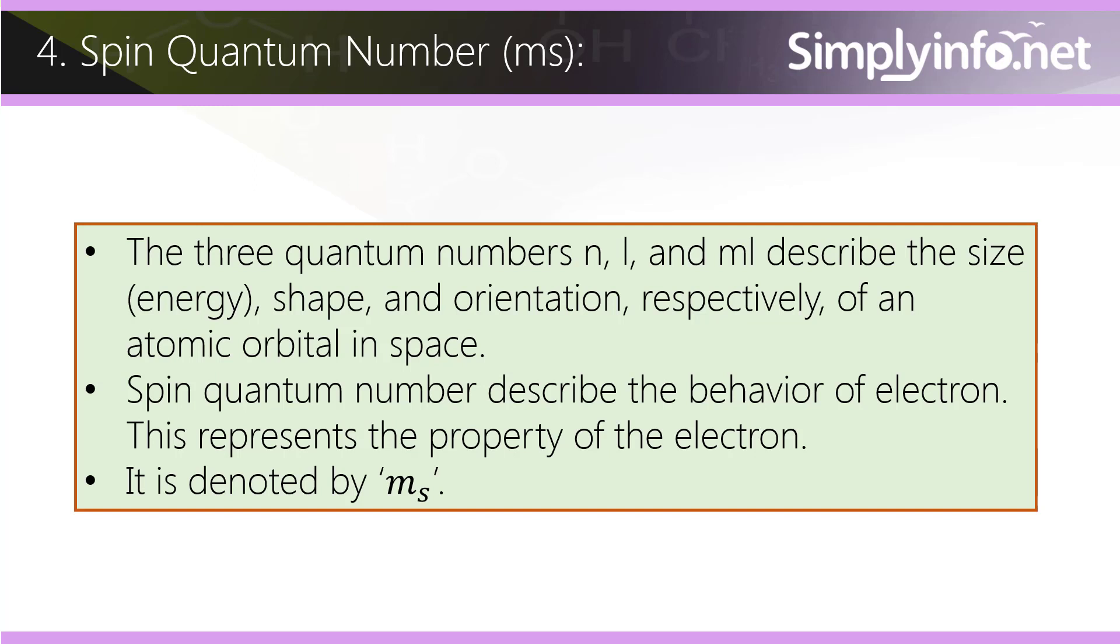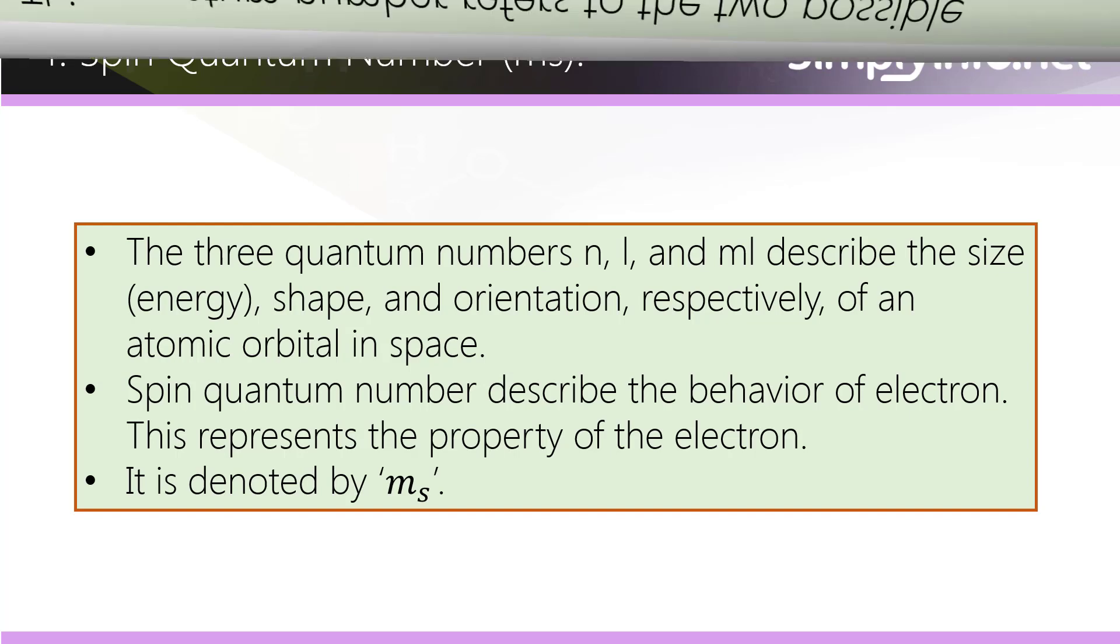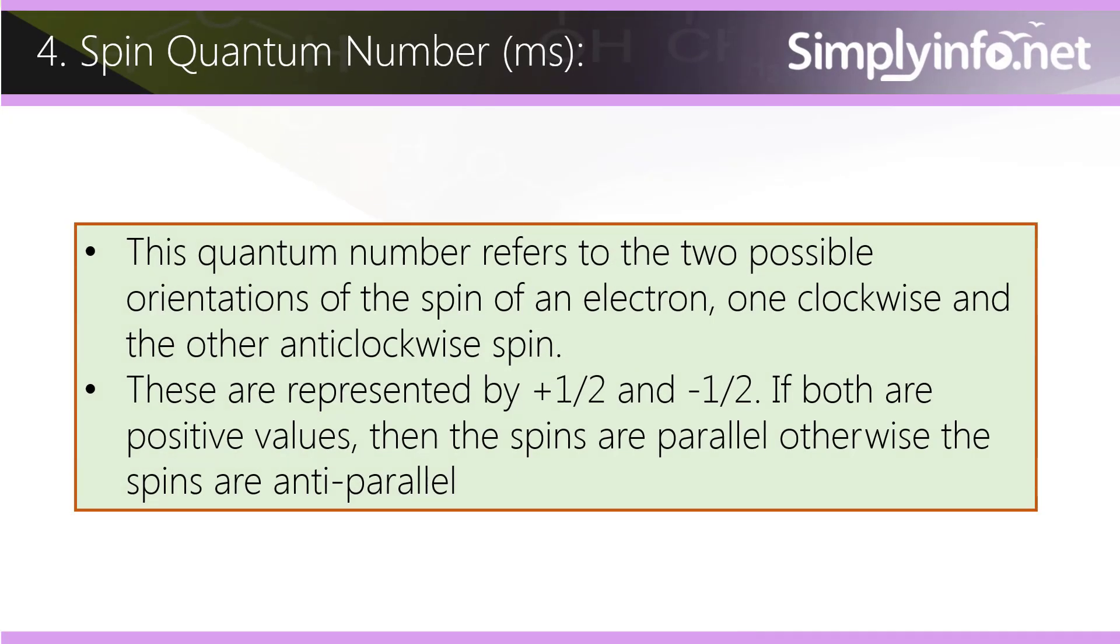Spin quantum number describes the behavior of the electron. This represents the property of the electron. It is denoted by ms. This quantum number refers to the two possible orientations of the spin of an electron.